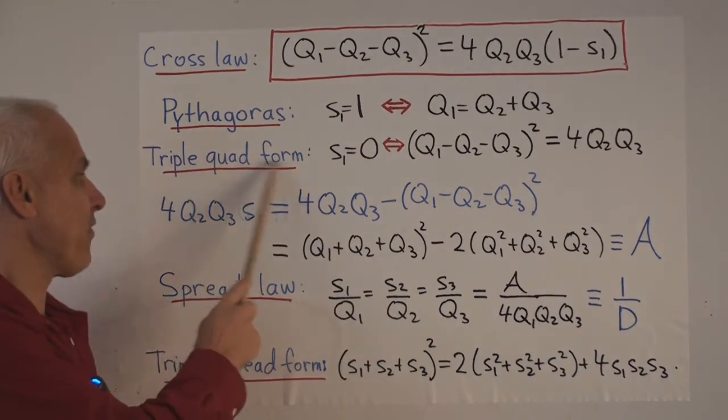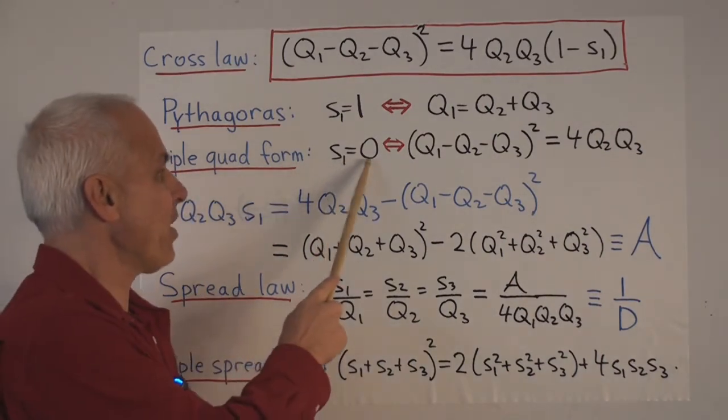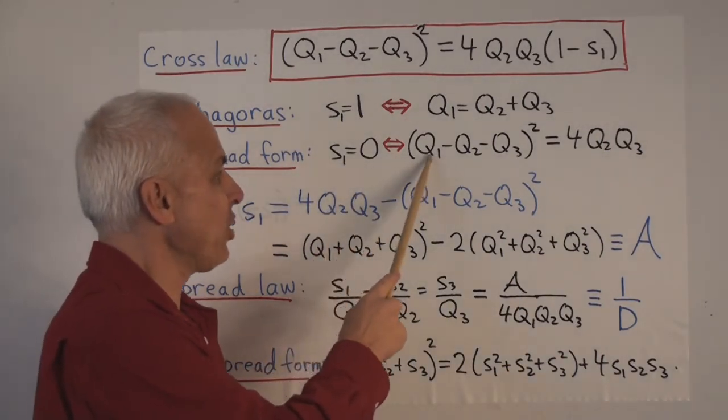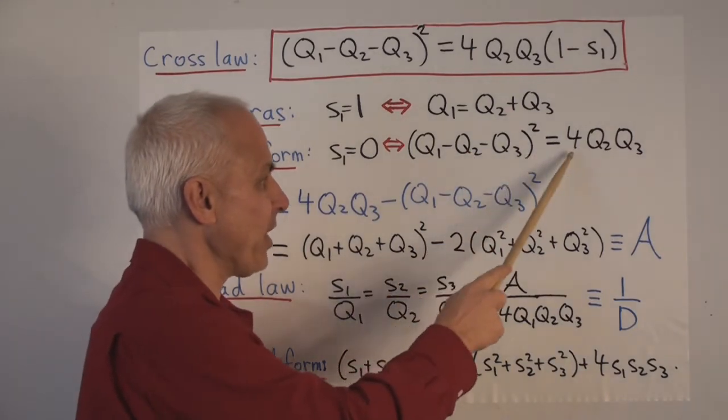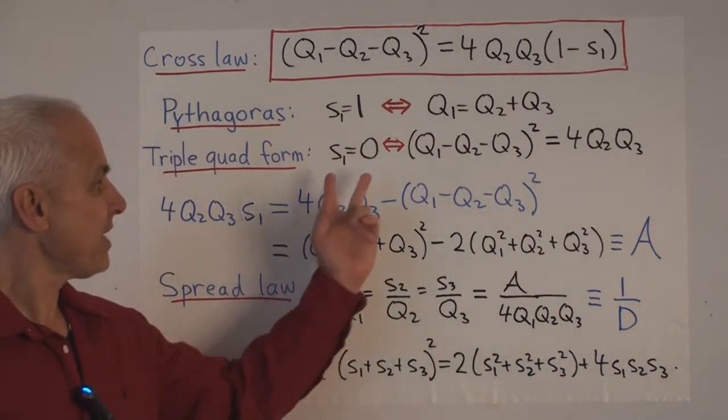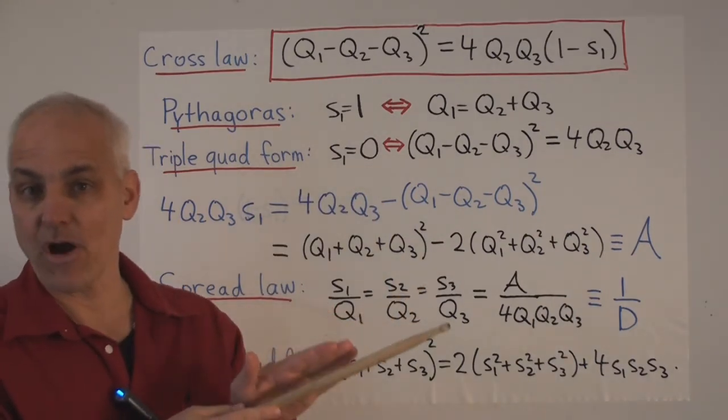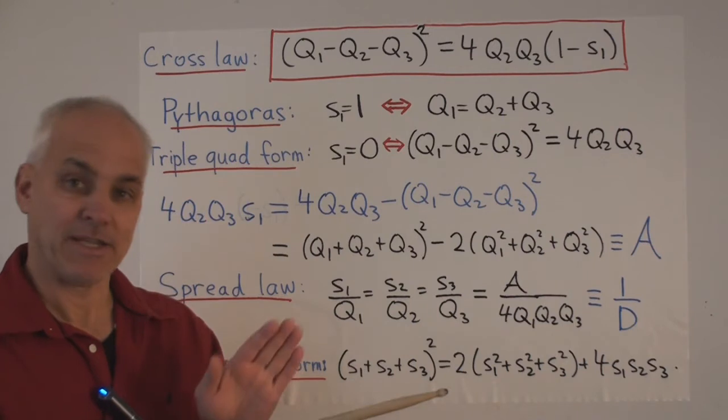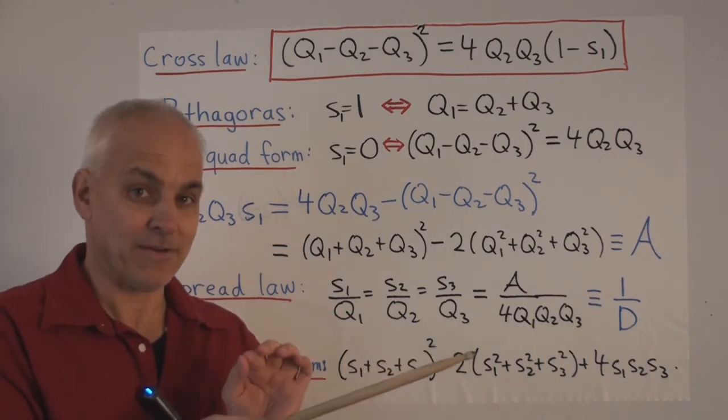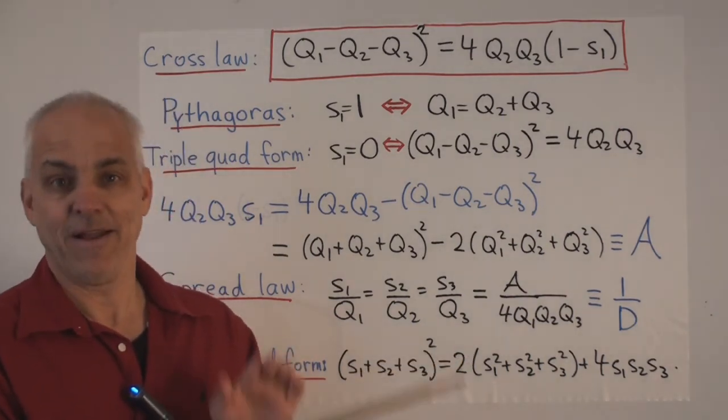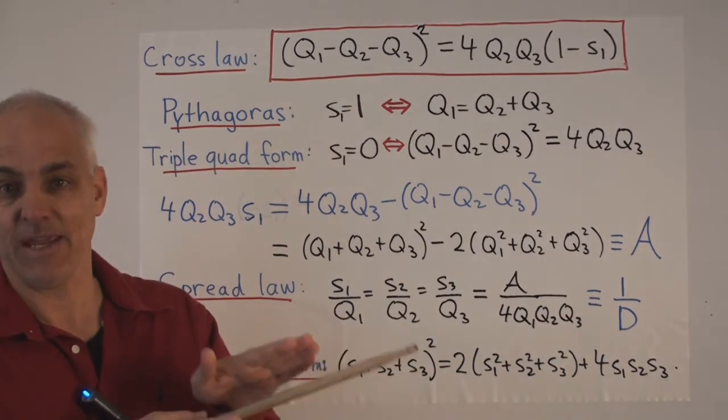The triple quad formula says that S1 is 0 precisely when (Q1 - Q2 - Q3)² = 4Q2Q3. This S1 equals 0 is telling us that L2 and L3 are parallel. But since they intersect at A1, being parallel is the same as being equal.